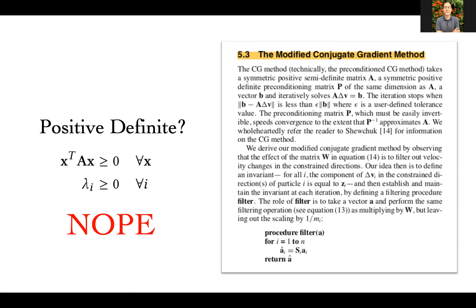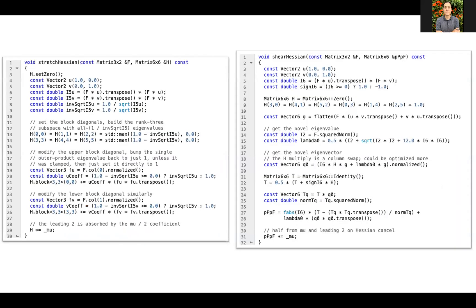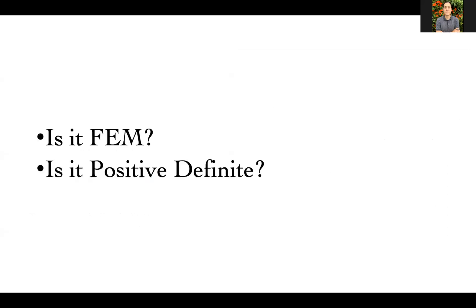The only reason Baraff-Witkin works is that other terms regularize the indefiniteness away. I'll show a projection method that always cuts off the indefinite part — it's actually not much code, pretty easy to implement once everything is lined up.